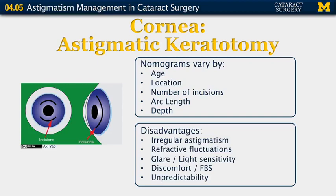Although astigmatic keratotomy has been performed for many years, there are several disadvantages. It can induce irregular astigmatism, and some patients will get refractive fluctuations after the procedure. Some patients also complain of glare, light sensitivity, discomfort, or a foreign body sensation, and there is some degree of unpredictability even with nomograms. Surgeons who perform this repeatedly tend to have a better sense of predictability.